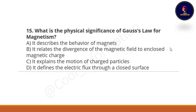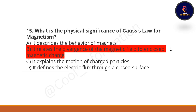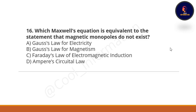Fifteenth question: what is the physical significance of Gauss's law of magnetism? Option A: it describes the behavior of magnets. Option B: it relates the divergence of the magnetic field to enclosed magnetic charge. Option C: it explains the motion of charged particles. Option D: it defines the electric flux through a closed surface. The correct option is B — it relates the divergence of the magnetic field to enclosed magnetic charge.